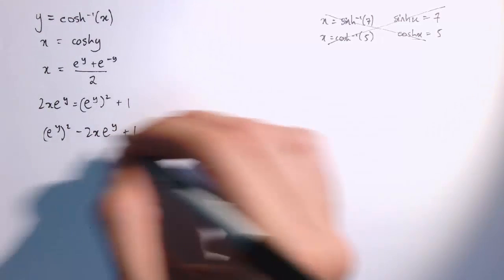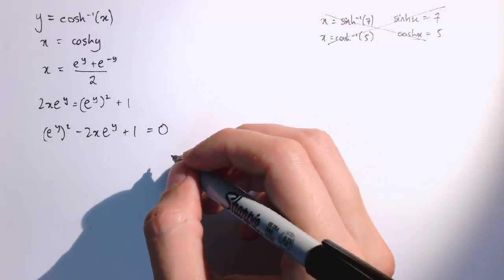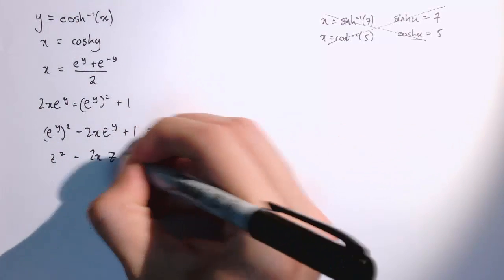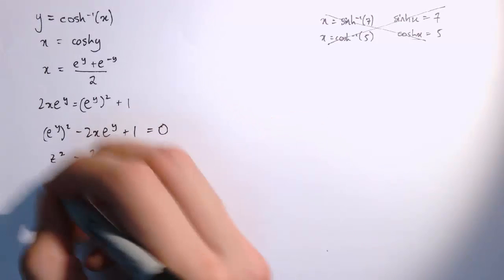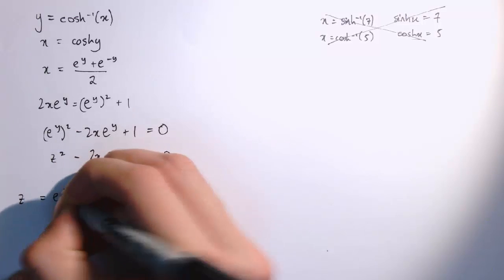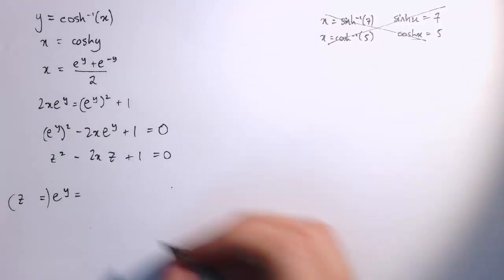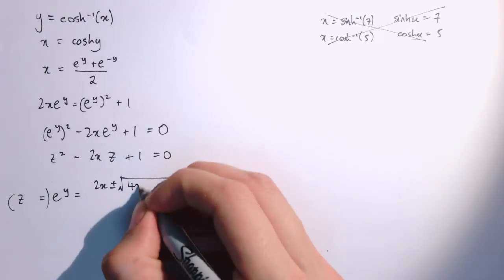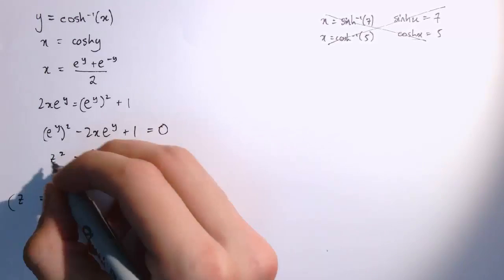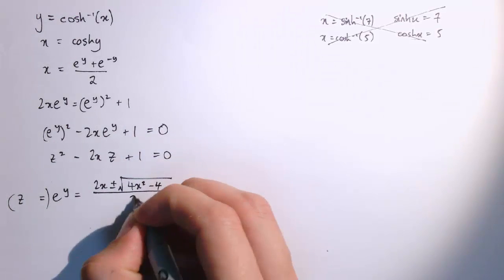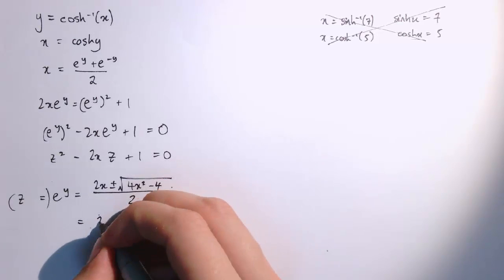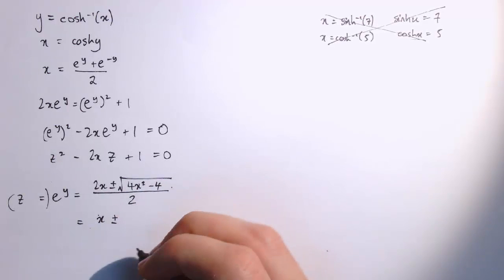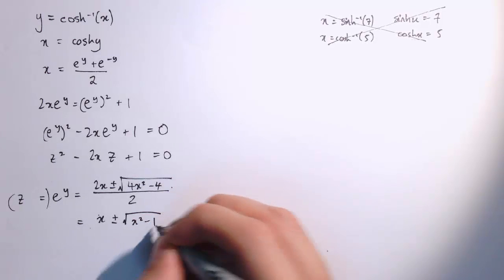And now applying the quadratic formula then, so just to make this clear, I've got z squared minus 2x times z plus 1 equals 0. So I'm solving for z or e to the y. So we've got z or e to the y is equal to minus b, so 2x plus or minus the square root of b squared. So minus 2x squared, that's 4x squared, minus 4 times 1 times 1, all divided by 2. So the 2 cancels here and also in here, the square root of 4 is 2. So this is just x plus or minus the square root of x squared minus 1.